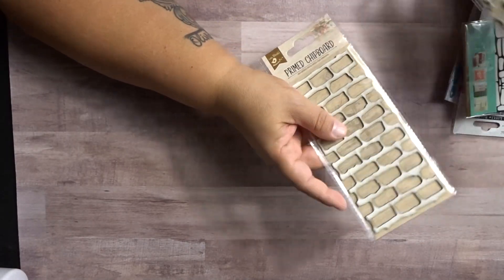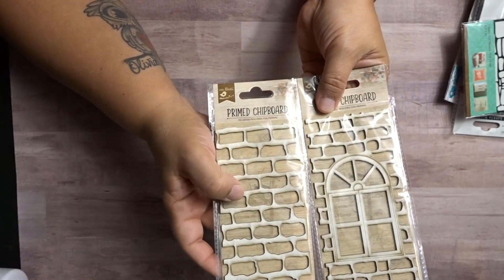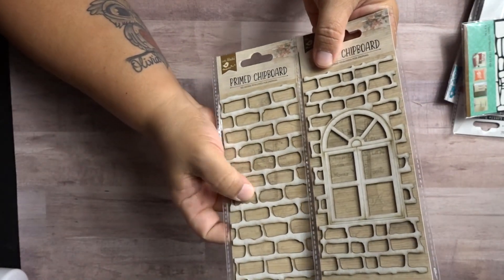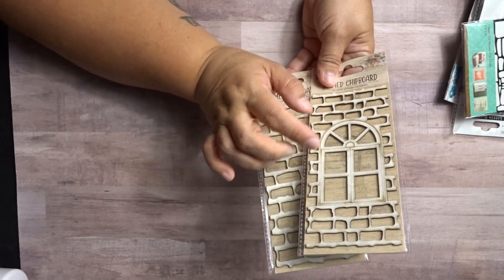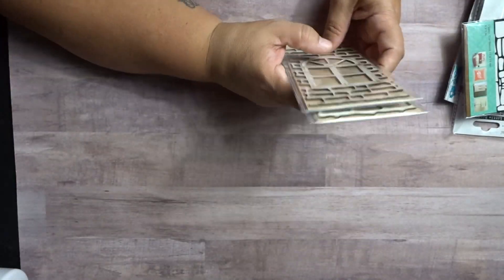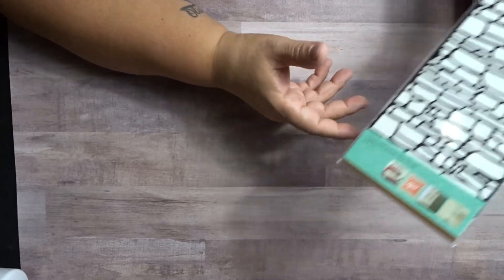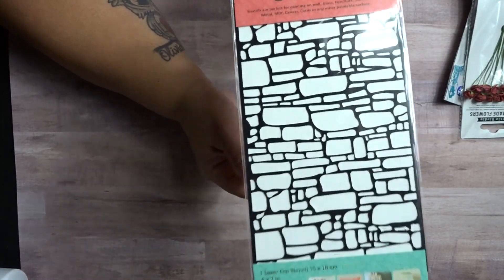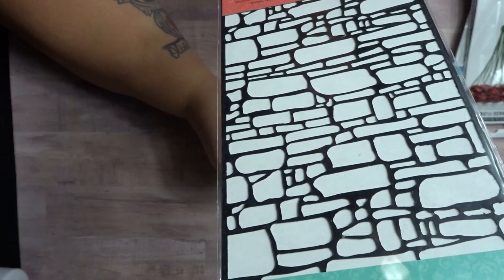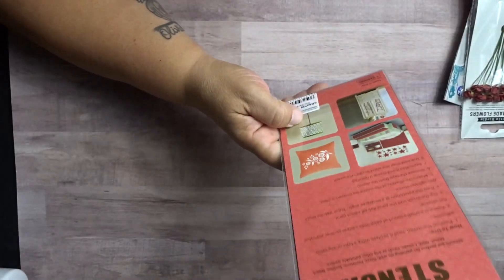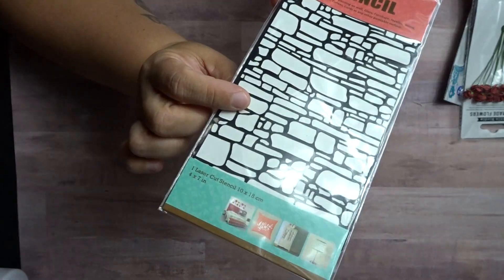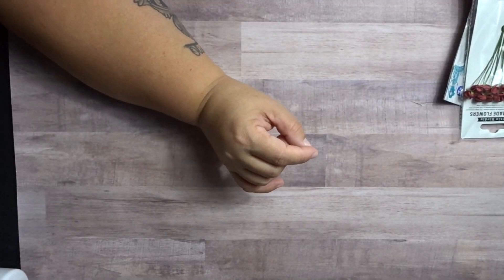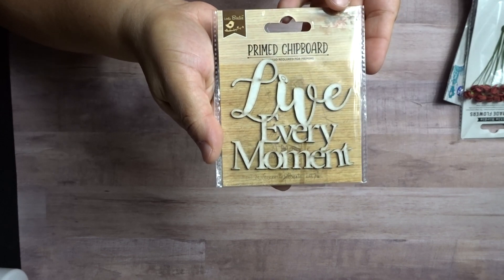So then I got these two pieces of chipboard that kind of go together. See them? But they're chipboard here. And I thought I could use these with some of those waxes and some of the gel stuff. Then I got this stencil here for kind of like the brick. They call it brick wall stencil for this one. And then this chipboard here says Live Every Moment.